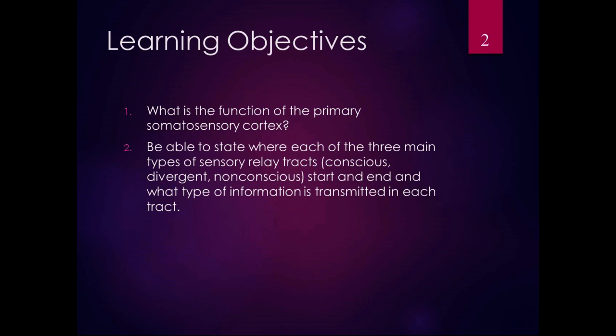You should be able to state where each of the three main types of sensory relay tracts — conscious, divergent, and non-conscious — start, where they end, and what type of information is transmitted in each tract. We'll start there and then we will add on.